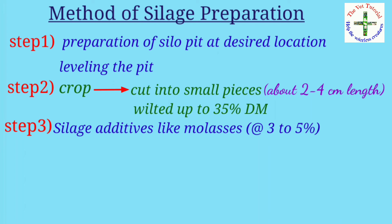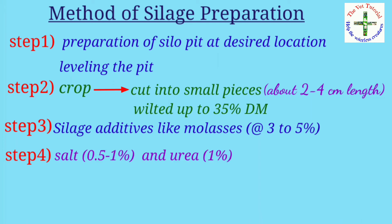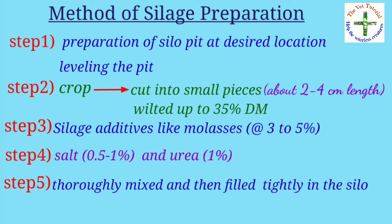Third, silage additives like molasses at the rate of three to five percent can be added to provide soluble carbohydrates for efficient bacterial fermentation. Fourth, to improve palatability and nitrogen content, salt at 0.5 percent and urea at one percent can be added respectively. Fifth, the whole material is thoroughly mixed and filled tightly in the silo, which should be sealed as soon as possible so that no air pockets remain.